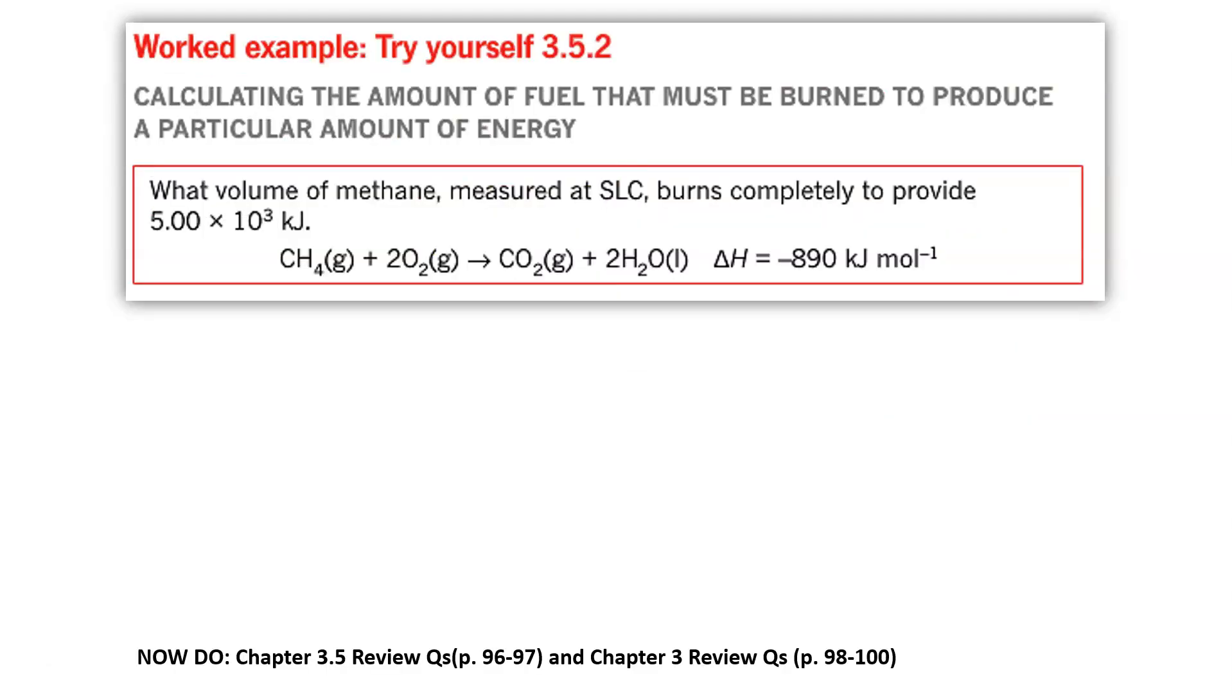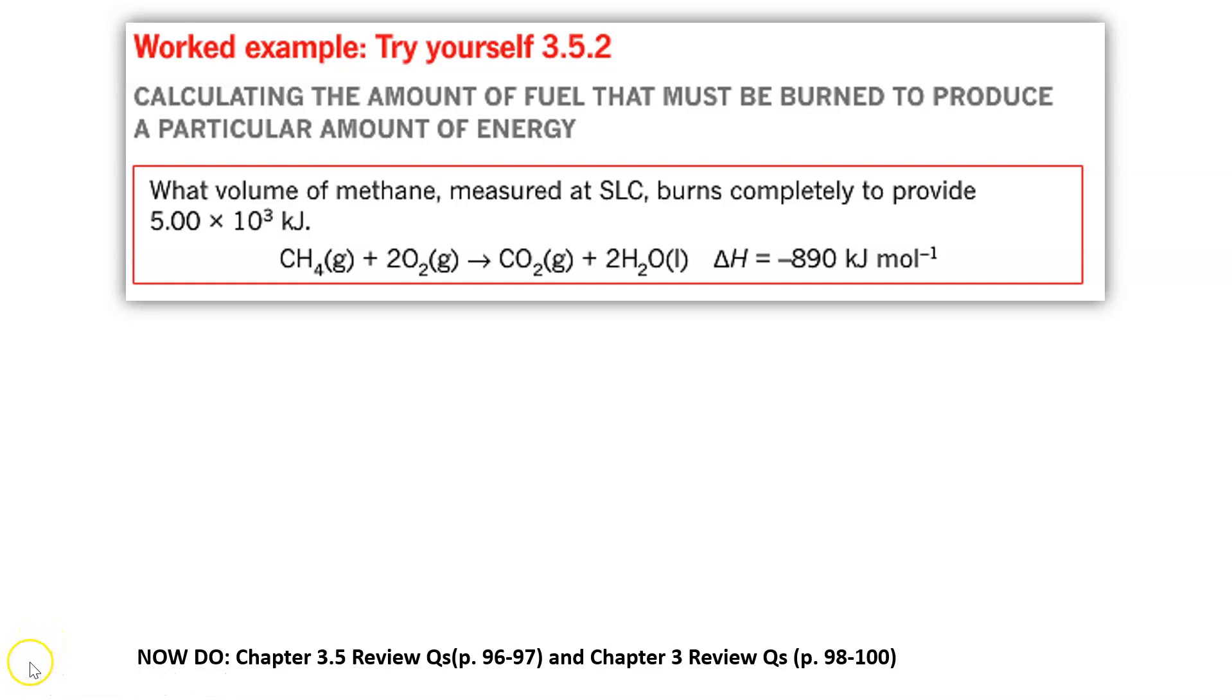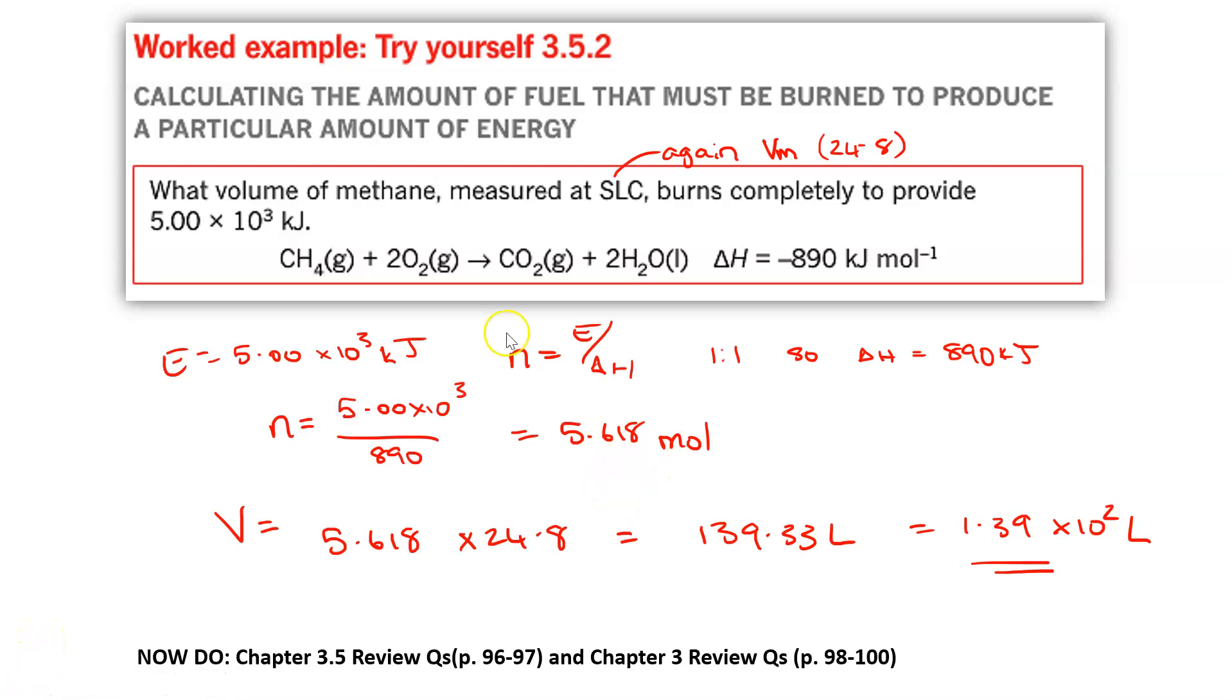Your turn. Have a go and come back and check your answer. Welcome back. Hopefully this one seems straightforward. We have a one is to one coefficient between our fuel and the delta H value. So we don't need to divide by two or do anything funny there. We've been given the amount of energy and we want to find the volume of methane that would be required to do that. So we're going to work out the number of mole that would be required by taking energy and dividing by delta H. That gives us 5.618 mole of methane. Then we're going to find the volume by taking that 5.618 and multiplying by 24.8 and remembering to check our significant figures and give our answer to the correct significant figures.